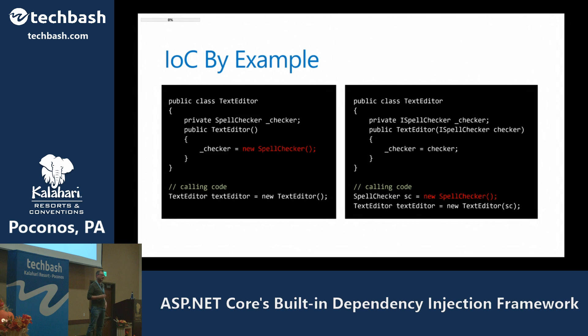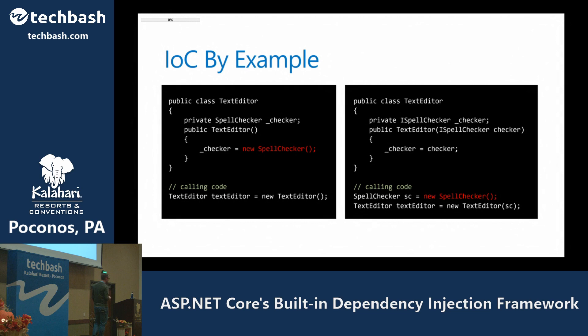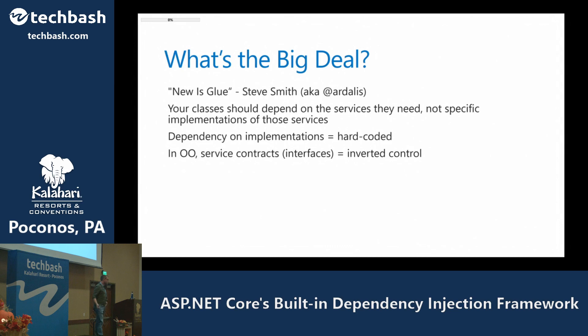When we invert the control, it means the control of where a dependency comes from is taken above the class — it comes from the calling code. The SpellChecker is created outside and passed into the constructor. The TextEditor now has a relationship to the ISpellChecker interface, not the implementation. Anything that implements that interface can be passed in at runtime, and this code doesn't have to be recompiled even if new spell checkers come along. That's inversion of control in a nutshell.